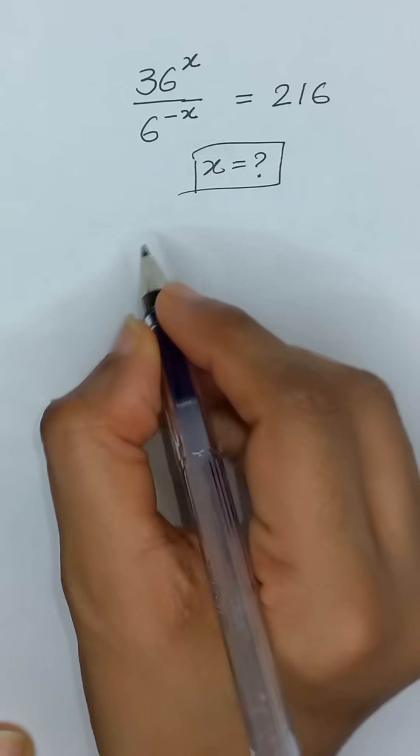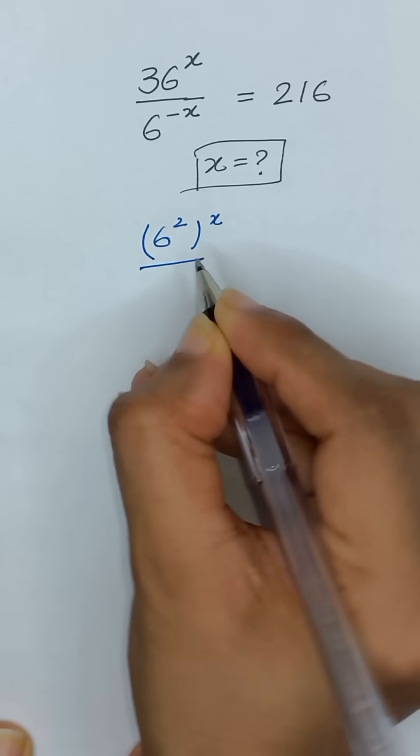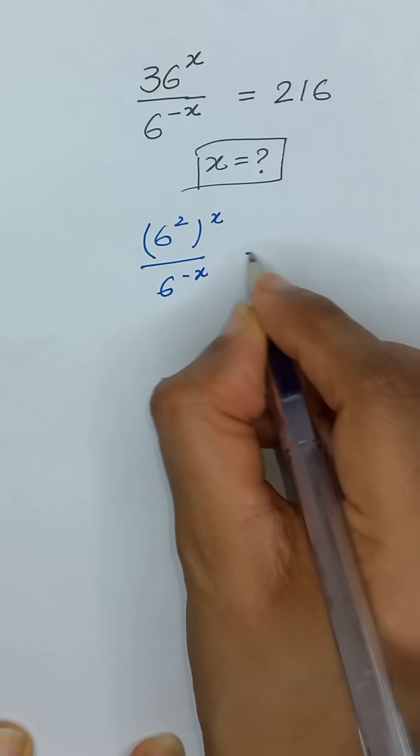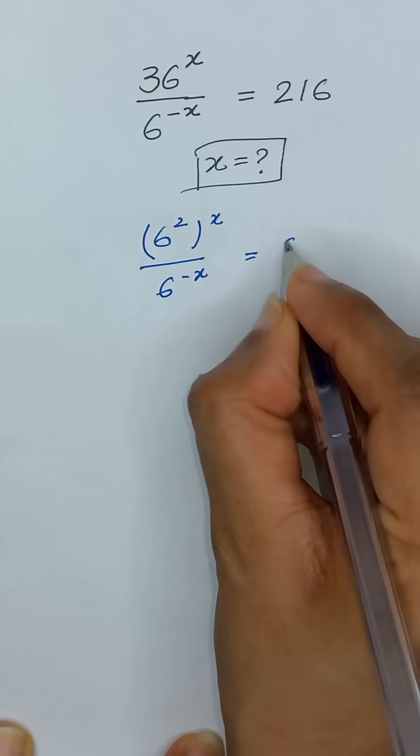So here we have 36. 36 is same as 6 to the power 2 and it's power x divided by 6 to the power minus x is equal to 216 is same as 6 to the power 3.